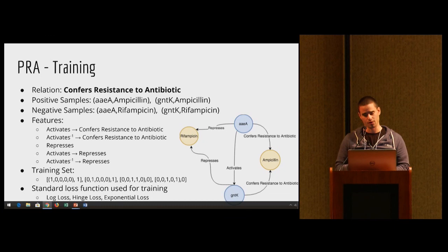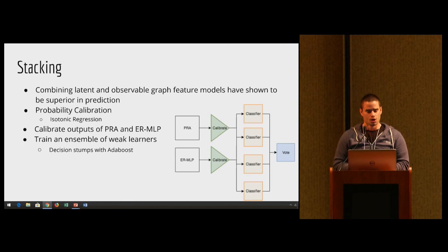That'll represent perhaps negative instances of where an edge should not exist. So you take all these paths, and these will represent our features. This will build our feature space. Then you'll have a label indicator of whether or not that edge is true or false. And then you train it by using a standard loss function like log loss, hinge loss, or exponential loss.